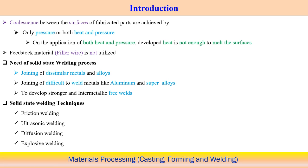In solid state deformation, coalescence between surfaces or fabricated parts is done with the application of pressure — either pressure alone, or both heat and pressure together — to join two components. The heat applied is not enough to melt the substrate material; that is why joining occurs below the melting point temperature. Unlike fusion welding, there is no need for filler material in these welding processes.